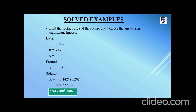Rounding off: 2 is less than 5 so we simply drop it. 7 is greater than 5, so when we drop it we add 1 to its next number, which is 2 — making it 3. Now 3 is also less than 5, so we drop it, and we are left with 0.50. This is our required answer.